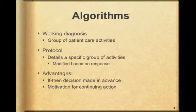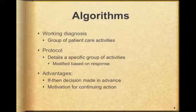Algorithms. Working diagnosis is a group of patient care activities based on a presumptive conclusion. We need clinical evidence; once we find it, we make a working diagnosis, and from there we apply treatment. Protocol: details of a specific group of activities to be accomplished for a given patient for a specific presumptive diagnosis. Most of us work underneath a protocol base and modify it depending upon the response. If we're not getting the response we need, we reevaluate our working diagnosis. If-then decisions are made in advance — the algorithm tells us: if this occurs, then we do this, giving us a motivation for continuing action.